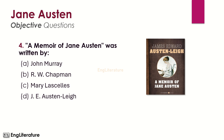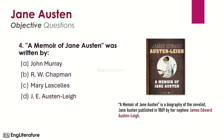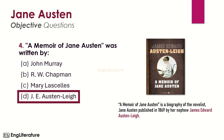A Memoir of Jane Austen is a biography of Jane Austen published in 1869 by her nephew James Edward Austen Lee. The right choice is number D — A Memoir of Jane Austen was written by James Edward Austen Lee.